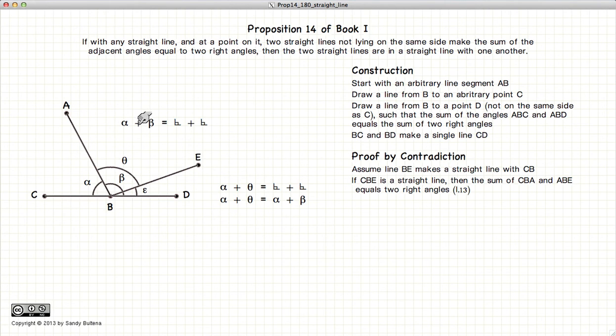So we end up with alpha plus beta is two right angles. We have alpha plus theta equals two right angles, which gives us that alpha plus theta is equal to alpha plus beta.